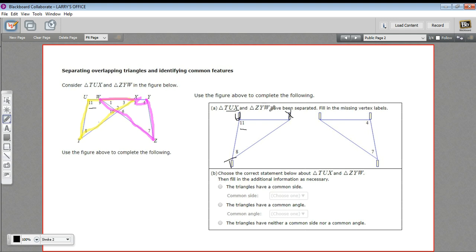If you get confused, remember triangle TUX means the vertices have to be U, T, and X. We'll do the same for ZYW. W is over here, Y is by angle 4, and Z is down here by angle 7.